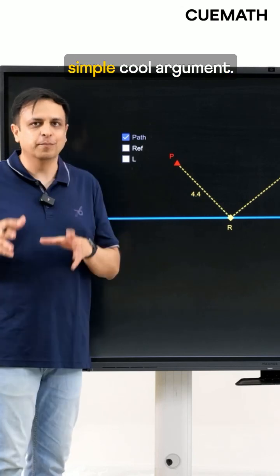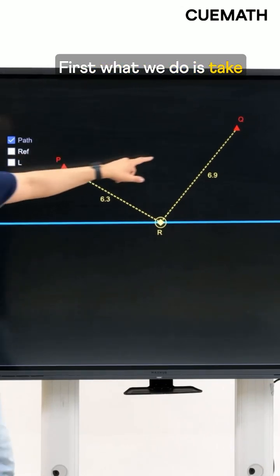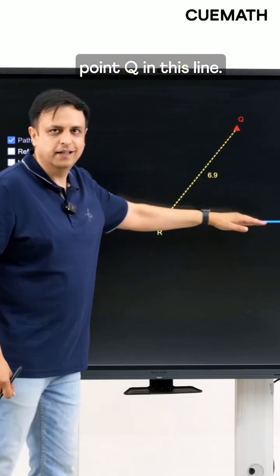Now here's a really simple cool argument to find this location of R that minimizes PR plus RQ. First what we do is take the reflection of this point Q in this line.